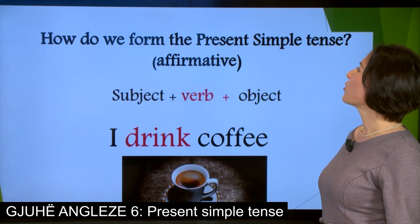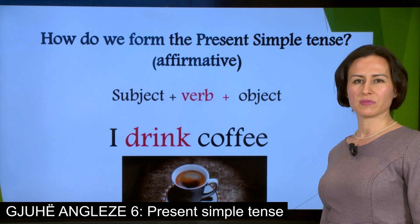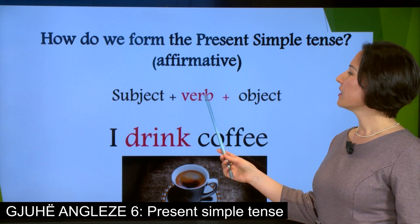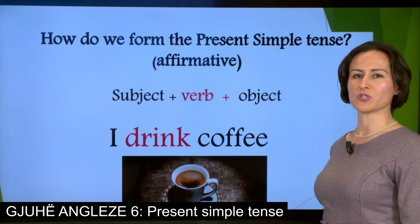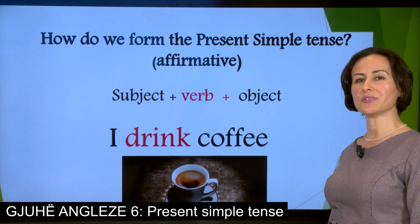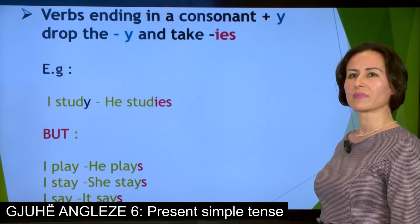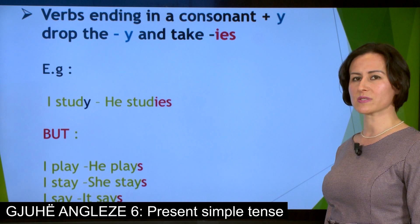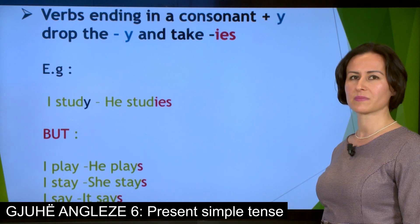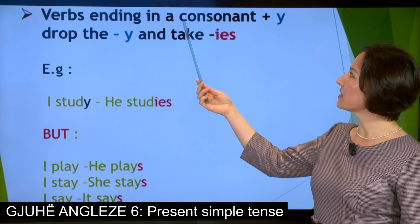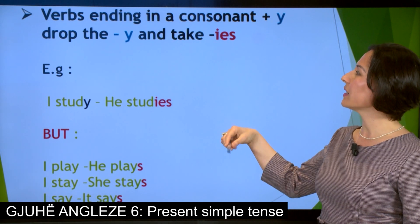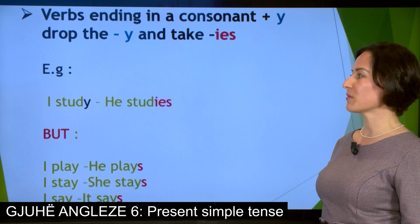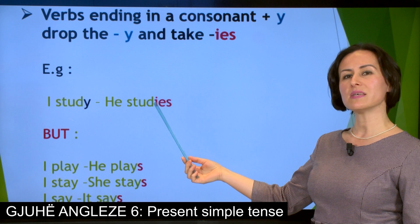How do we form the present simple tense affirmative? We form it by making use of the subject, the verb, and the object — as in the following example: I drink coffee. We should bear in mind some essential rules, such as verbs ending in a consonant plus Y: drop the Y and take -IES. For example, I study, he studies.